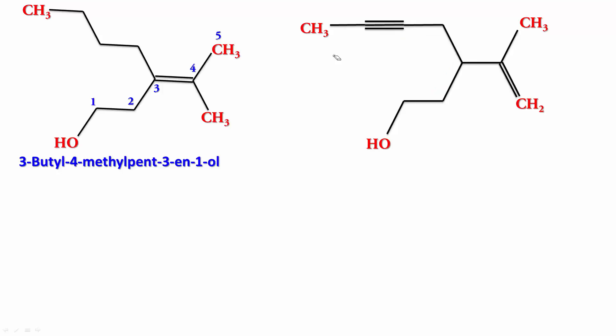The numbering again has to be done keeping the carbon having the OH getting the least number. We do the numbering this way. As you can see, on carbon 3 this particular thing sitting is isopropenyl. So it's 3-isopropenylhept-5-yn-1-ol.